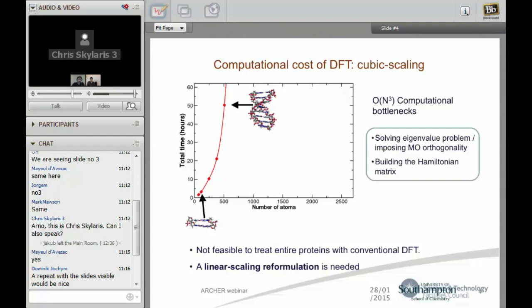This is due to certain unavoidable bottlenecks in straightforward density functional theory such as having to do matrix diagonalization.